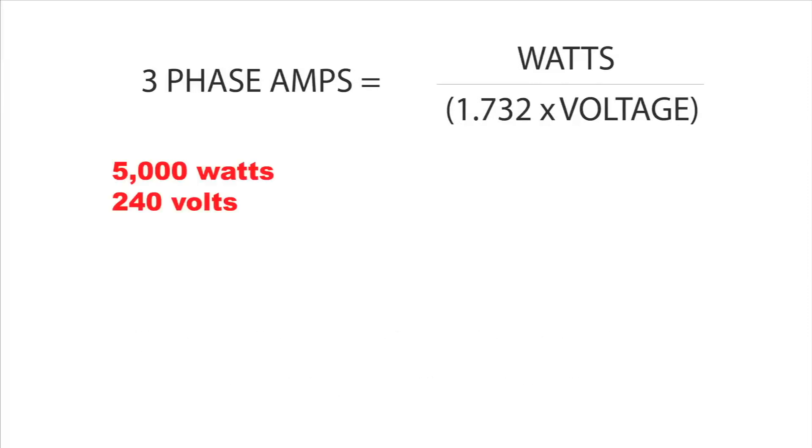In the first example, our known values are going to be 5,000 watts and our voltage is going to be 240 volts. So, to begin with...